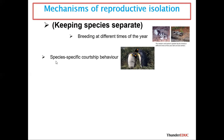Number two is species-specific courtship behavior. The way humans do courtship is different from how dogs or birds do courtship. We have different ways in which we seek mates. So the difference in courtship behavior between species can also lead to reproductive isolation.